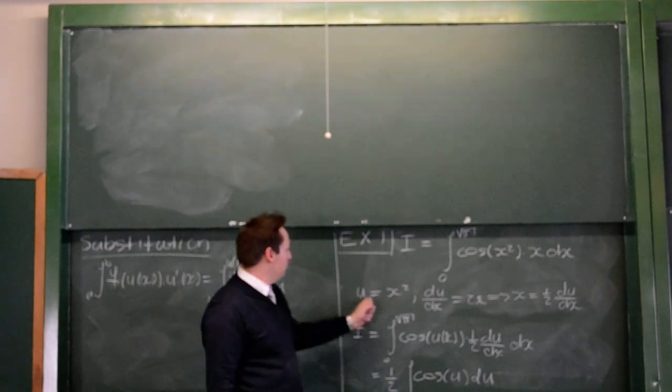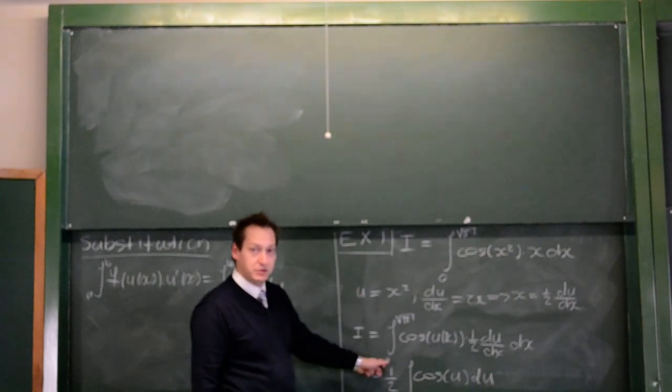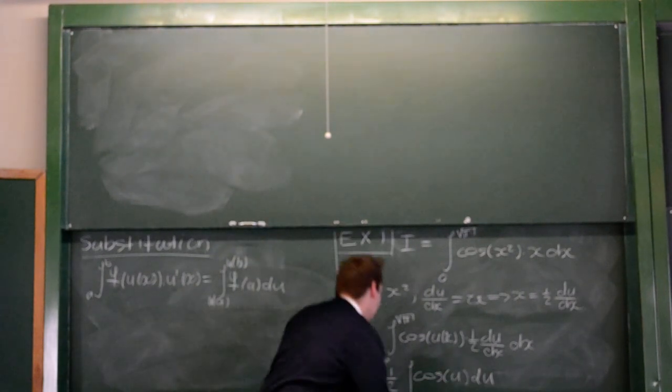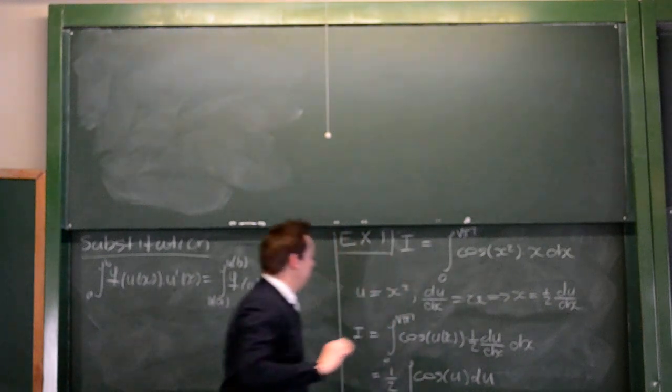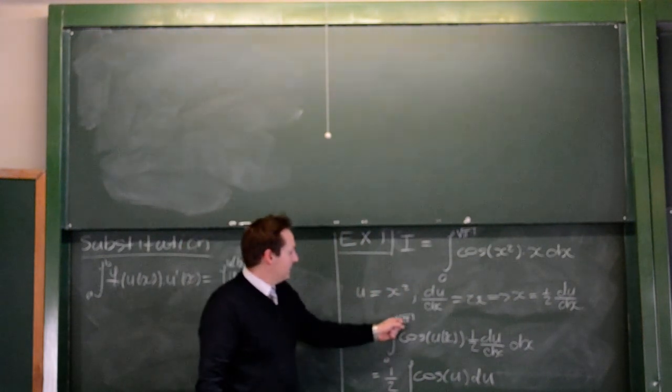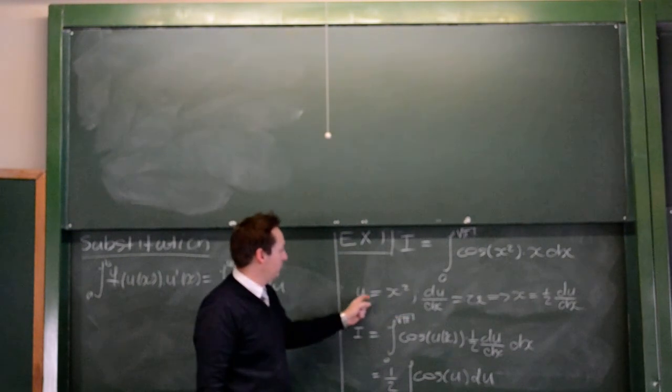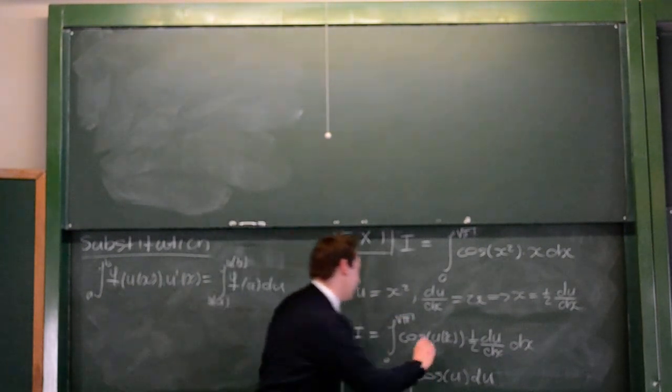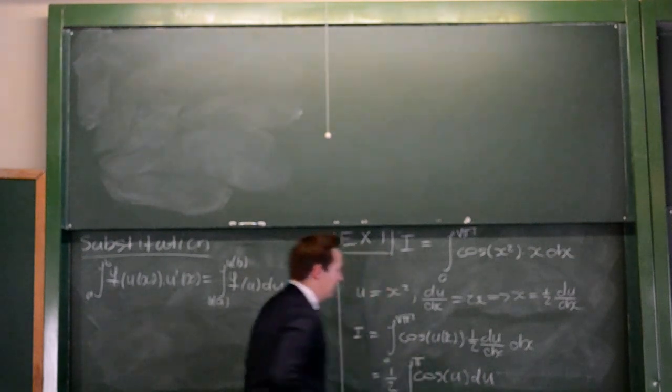So, if u is x squared, if x is 0, u is 0. If x is root pi, then u equals x squared will be pi. There we go.